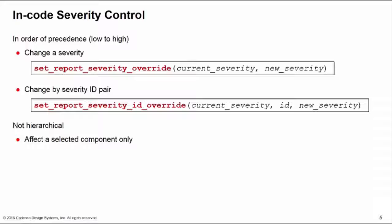These method calls are not hierarchical. They only affect a single component to which they're applied. These methods can be called using a hierarchical path name. Call these inside of a test class, which gives you the ability to turn them on and off by switching between tests.